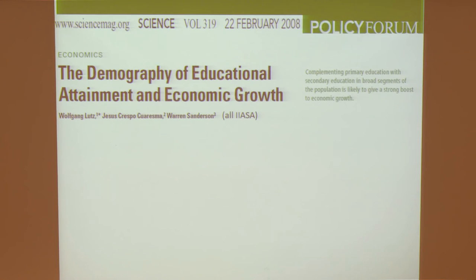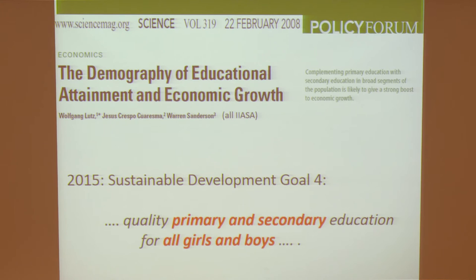Now the consequences — using reconstructions of education-specific fertility for all countries in the world, we revisited the issue of human capital as a driver of economic growth and showed that the literature, which was quite confused up to that date, shows very consistent positive and significant coefficients for education. We also showed that for a country to come out of poverty, universal primary education is not enough — that was the focus of the Millennium Development Goals — but you need broad-based secondary education as well, at least junior secondary. We were really very happy to see that the new Sustainable Development Goals include Goal 4 on education, adding secondary education, focusing on quality primary and secondary education for all girls and boys.